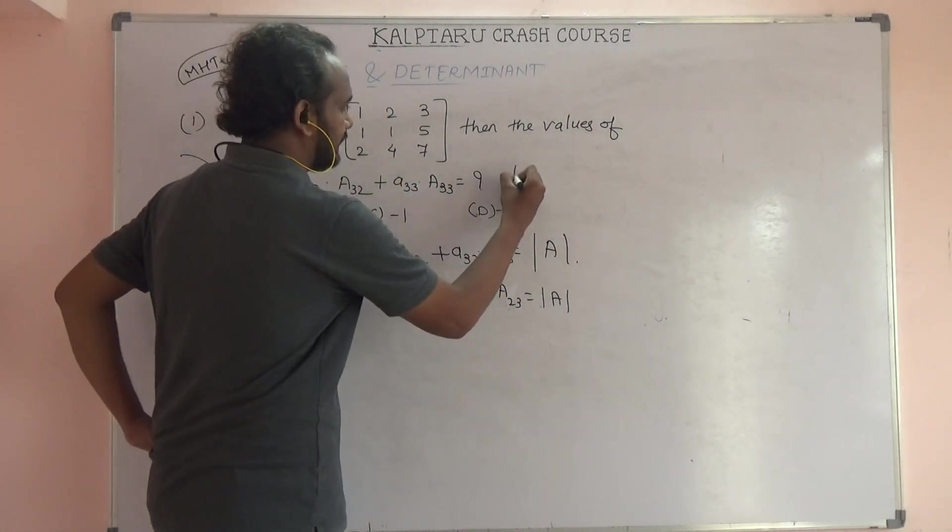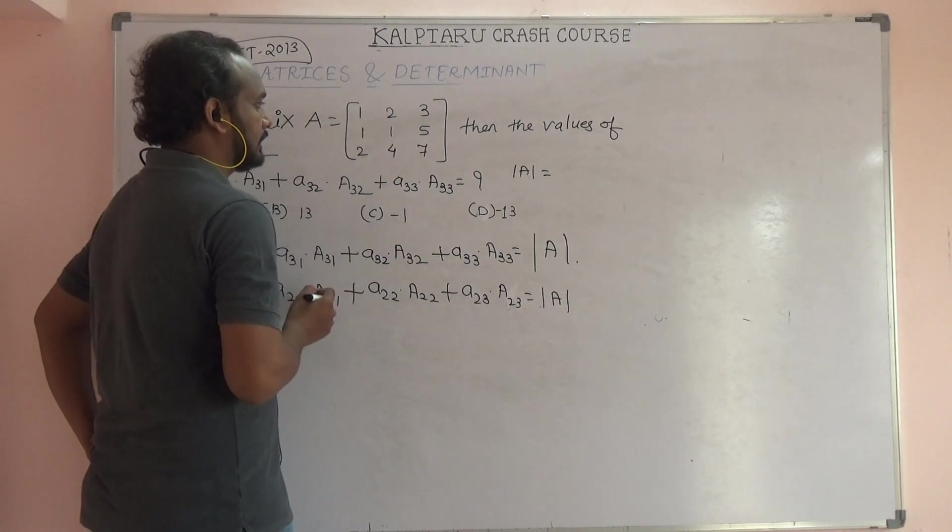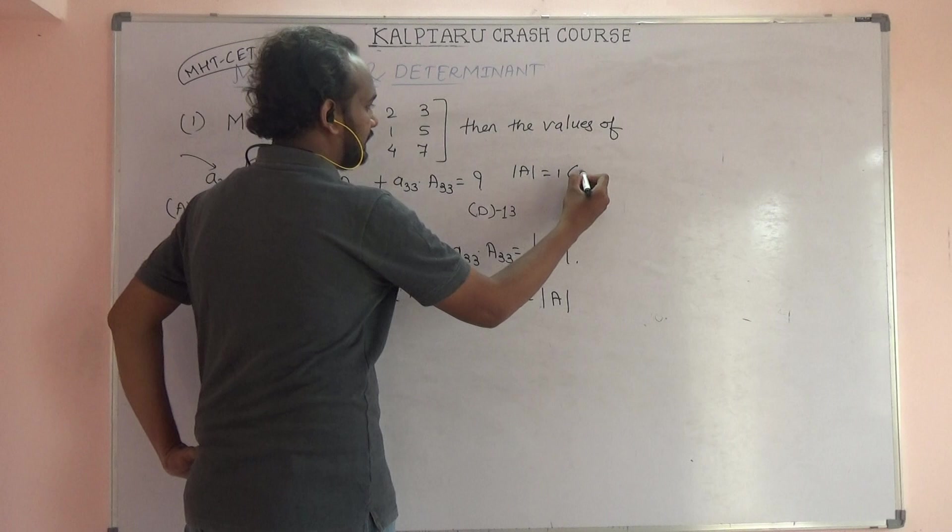So here we will find simply determinant of A. Let me find what the determinant of A is. That is 1, 7 into...